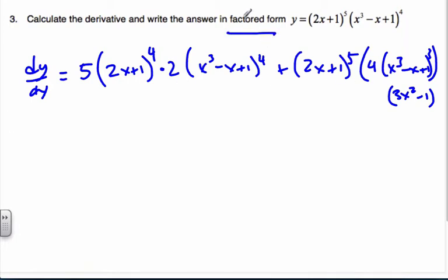If I look here, I can see I have 2x + 1 appearing with powers of 4 and 5. I also have x³ - x + 1 appearing here and here. I can also see a 2 in both terms. So pulling out factors: I can pull out a 2, a (2x + 1)^4 because 4 is the smaller power.